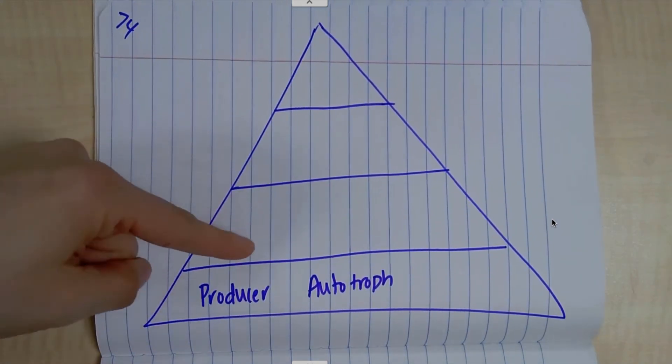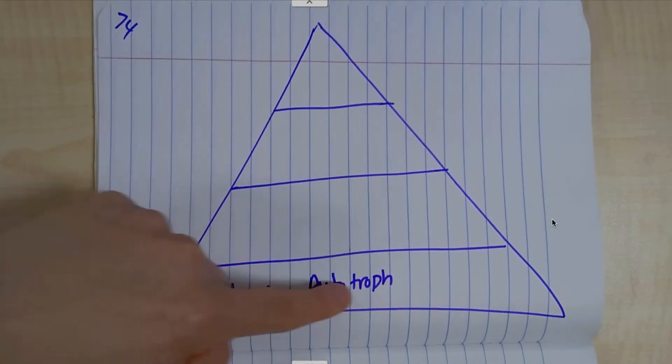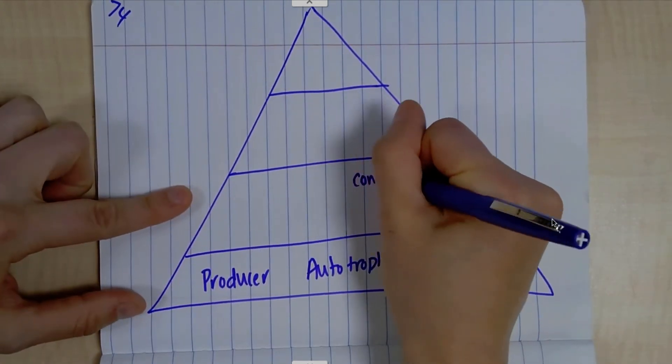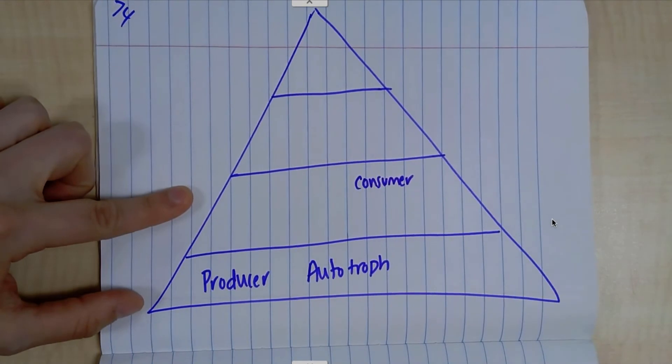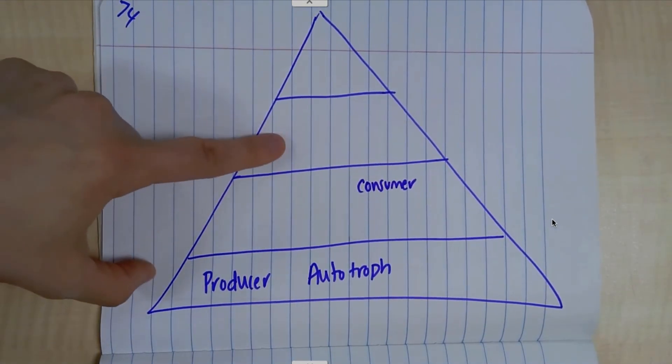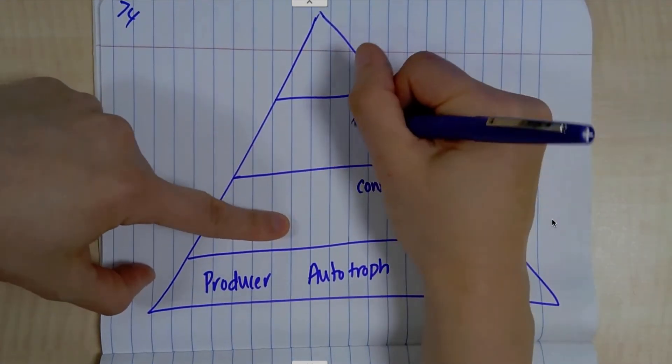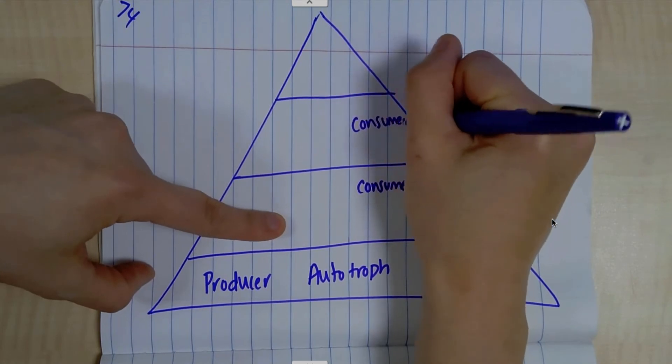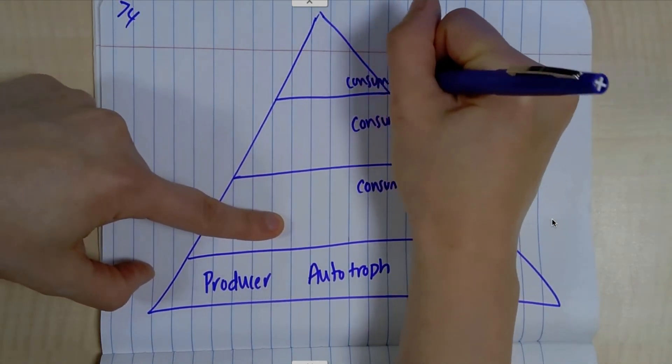Well, what eats the producer or autotroph? That would be a consumer. A consumer has to get its energy from eating something else. Same thing up here. It's going to eat the level below it. So that would be a consumer, as well as our final one would be a consumer.